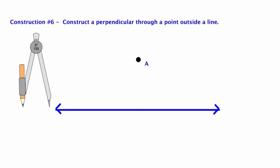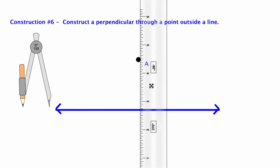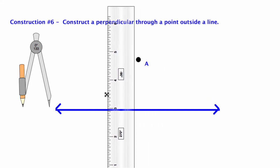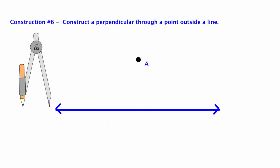For this construction, I'm going to draw a perpendicular through a point outside a line. It's going to go through the point and meet the line at 90 degrees. Don't use your straight edge. Use your compass to do this by construction.